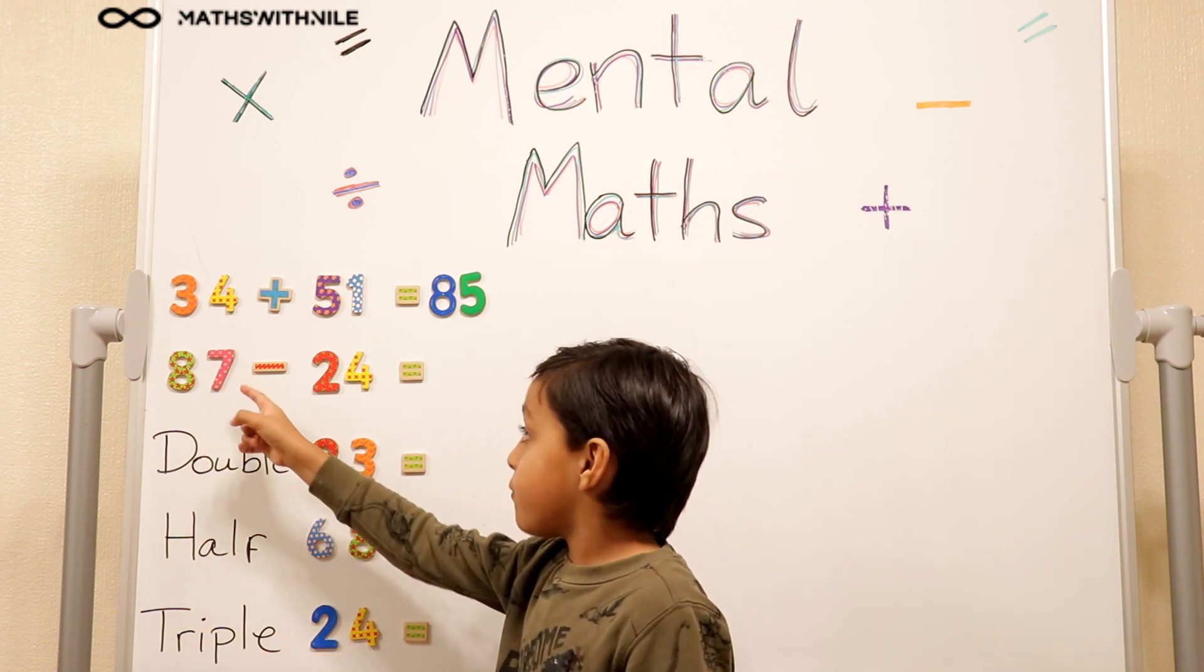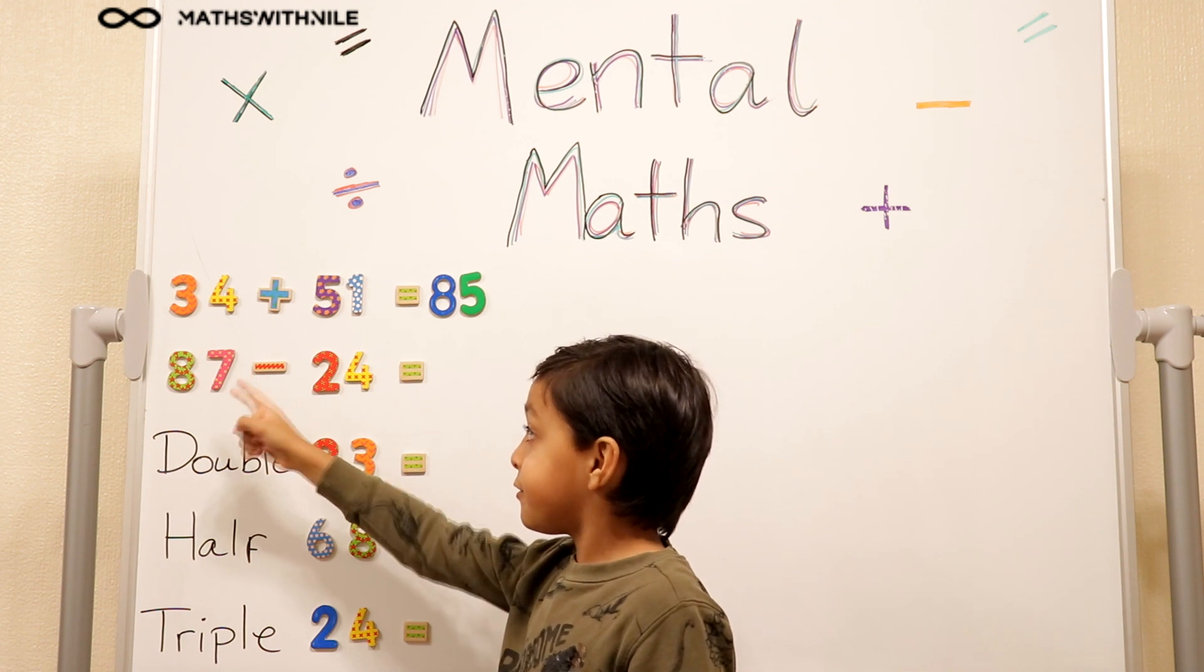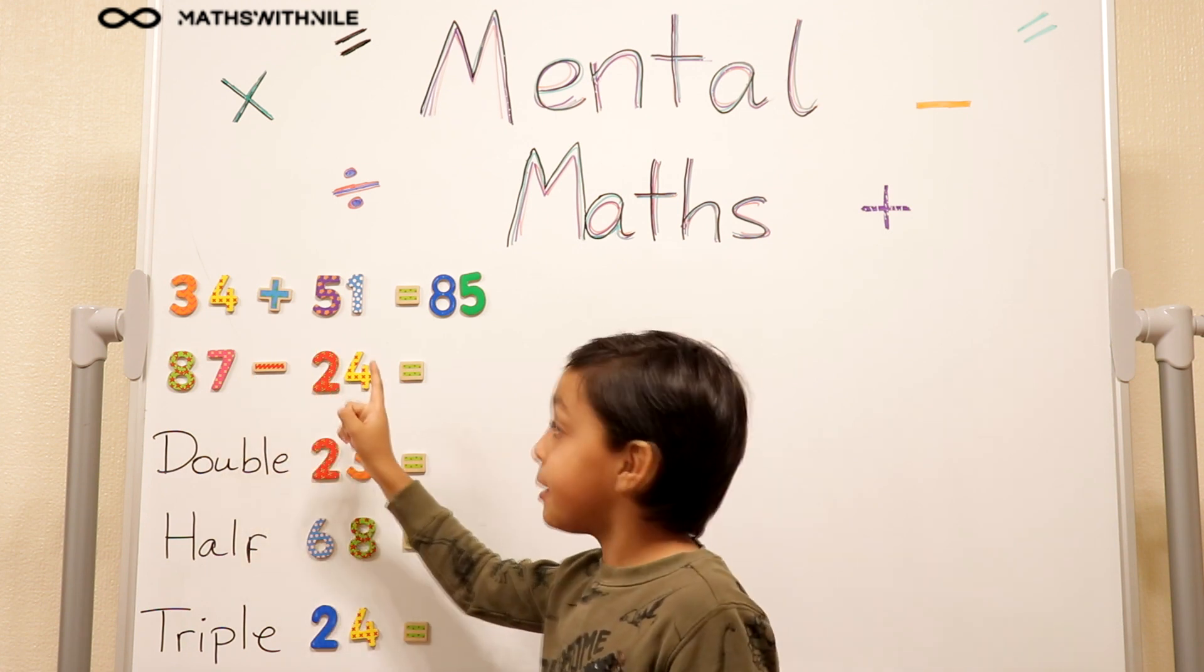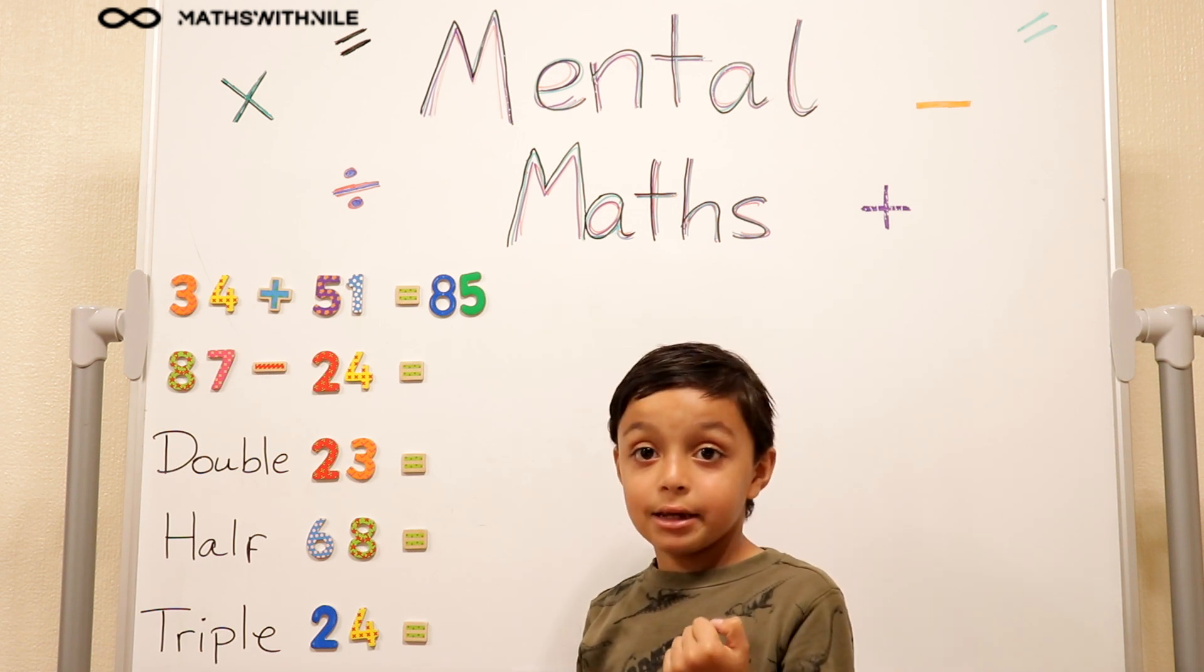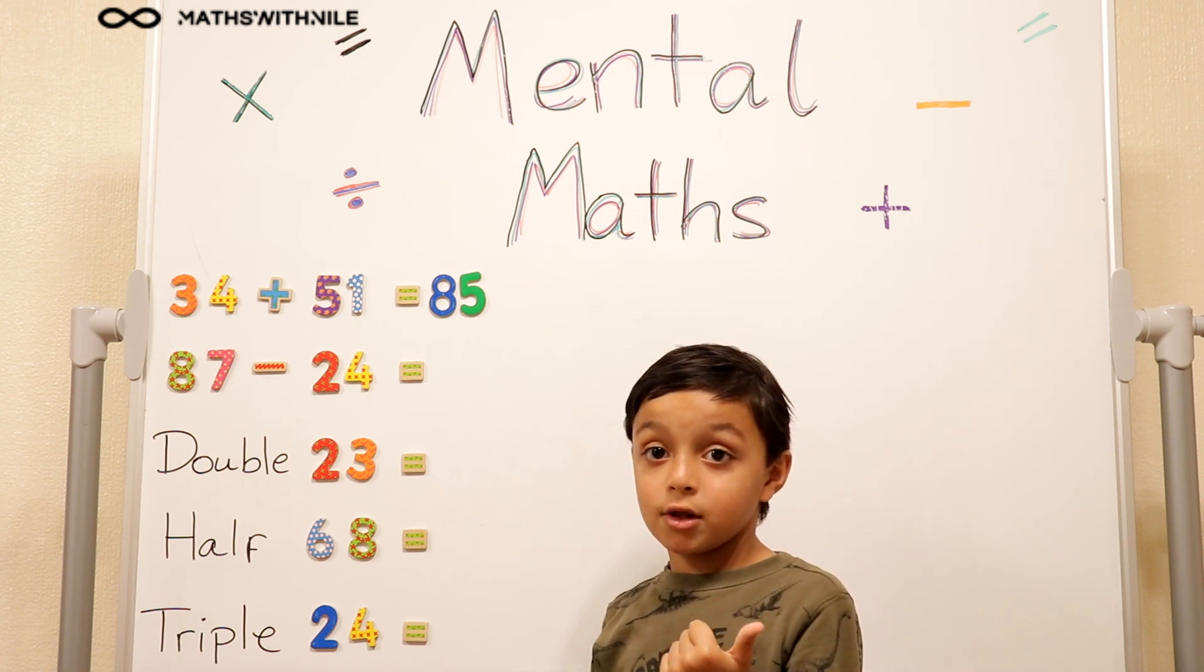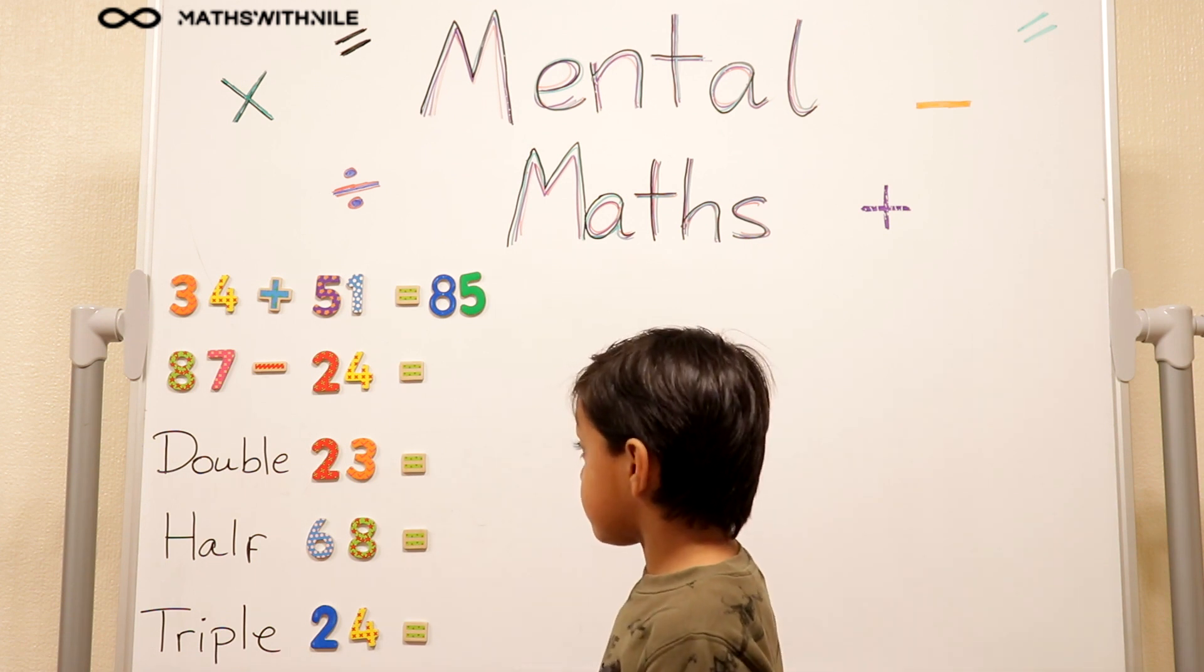87 take away 24. So 80 take away 20. So at 80, 70, 60. Okay, so 80 take away 20 is 60.